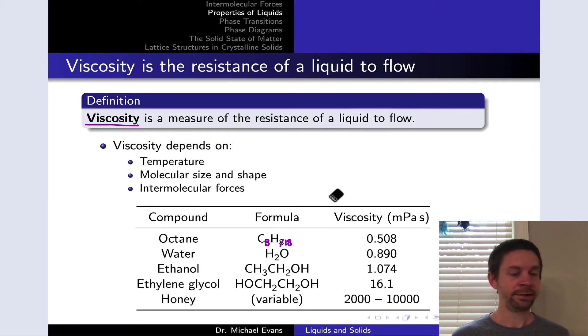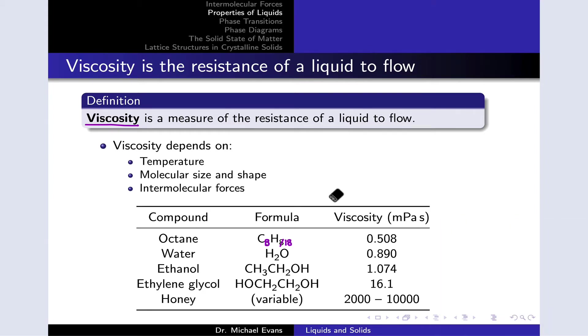Viscosity depends on the conditions in which a liquid is in and its molecular structure. For example, viscosity depends on temperature. The higher the temperature, the faster the molecules are moving and the easier flow becomes, so viscosity decreases due to that increased kinetic energy of the molecules.